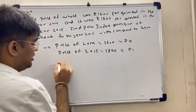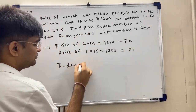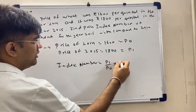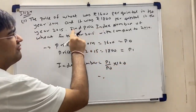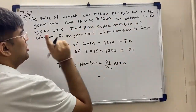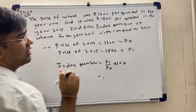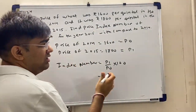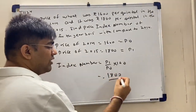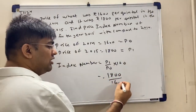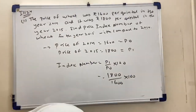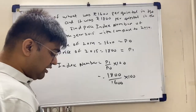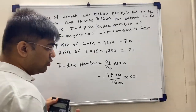Find the price index number. The index number formula is: P1 upon P0 into 100. We need to find the price index number of wheat for the year 2015 compared to 2014. So the calculation is 1800 upon 1600 into 100, which equals 112.5.